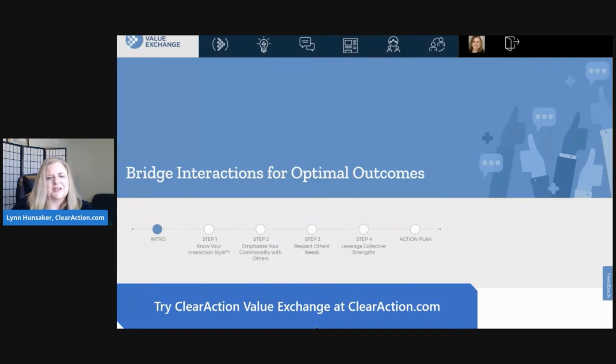This is an example of a solve space in the Clear Action Value Exchange. This solve space guides you in bridging your interactions with other personality types. First, know your own interaction style. Second, emphasize your commonality with others. Third, respect others' needs. And fourth, leverage your collective strengths. Solve spaces give you an action plan that you can experiment with right away. It's an interactive template to help you apply nuggets of wisdom to your current challenge.